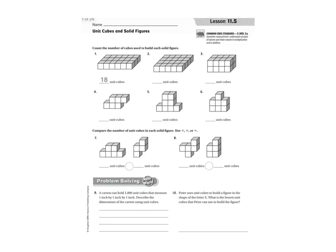Let's do a couple of the homework problems. This one has one, two, three, four, five, six, seven, eight unit cubes. Pay close attention to number three because it has a layer on the bottom that's the same as the layer on top. The top layer has eight cubes, which means there are eight underneath as well — eight and eight is 16 unit cubes. You can do the rest on your own, with a partner, or meet me on the carpet. Good luck.